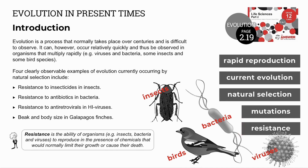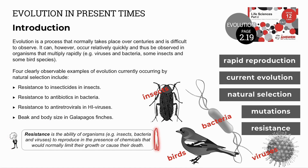Four observable examples of current evolution include insects developing resistance to insecticides, bacteria to antibiotics, HIV viruses developing resistance to antiretrovirals, or finches developing different beak and body sizes on the Galapagos Islands. Developing resistance means the ability of organisms to reproduce despite factors that would normally limit, inhibit, or restrict their growth.